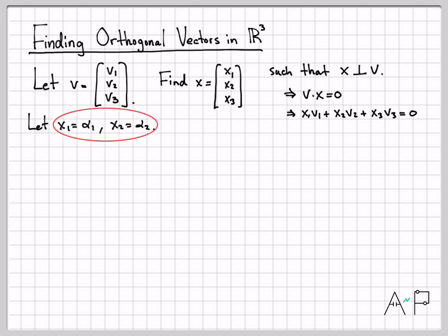Let's just pick some arbitrary values for x1 and x2. And then for those particular values of x1 and x2, let's compute what x3 has to be for this equality to hold. If we do that, we end up with the right side being negative α1·v1, negative α2·v2. And then if I divide by v3, I can figure out that x3 has to be equal to this quantity right here.